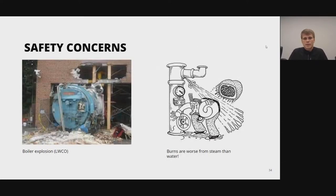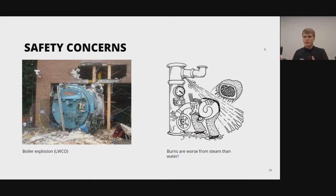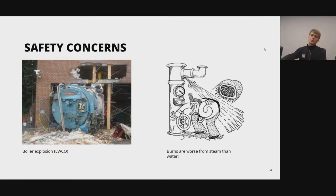Here on the left is a picture of a boiler explosion caused by a failure of a low water cutoff. All the water inside the boiler had boiled off and the boiler began to overheat. Once feed water was injected, it caused a massive amount of flash steam because the boiler was superheated — the water flashed off, creating a massive pressure surge, and it blew up.